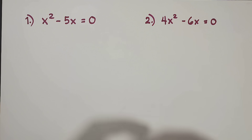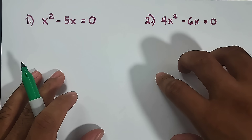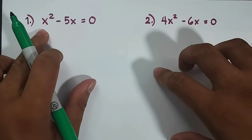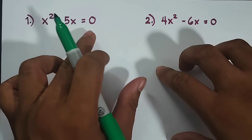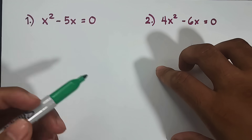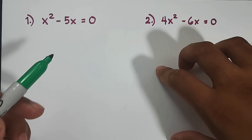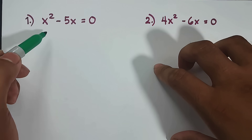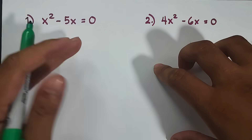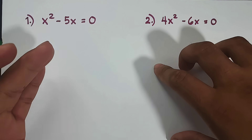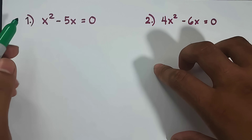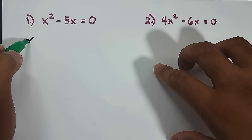Let's start with item number 1 and number 2. In number 1 and number 2, we will use greatest common factoring. As you can see, we have x squared minus 5x is equal to 0. We need to think of a greatest common factor from both x squared and negative 5x. When we talk about the coefficients, there's no common factor. But looking at the variable, we have the common factor which is the variable x.